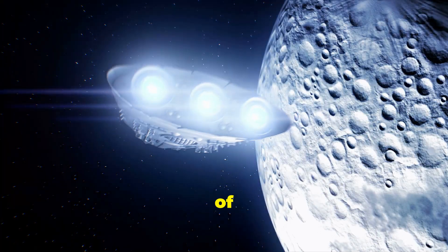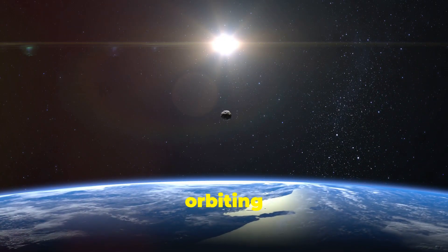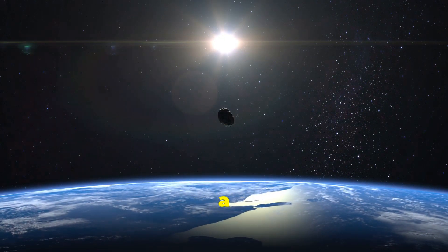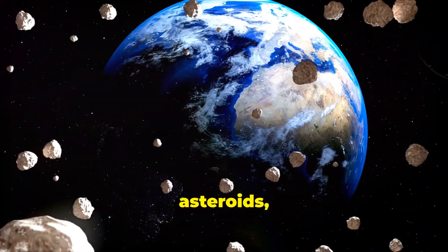Instead of a catastrophic collision, something even more intriguing happens. Instead, it starts orbiting both Earth and the moon in a crazy looping pattern. This creates a temporary yet mesmerizing dance in the sky.